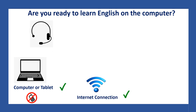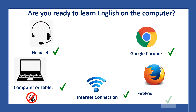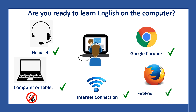You need a headset. A headset will let you hear your teacher and your classmates better, and your teacher and your classmates won't hear what's happening in your house. And to go to the George Brown College website, you need to use Google Chrome or Firefox. When you have all these things, you are ready to learn English on the computer.